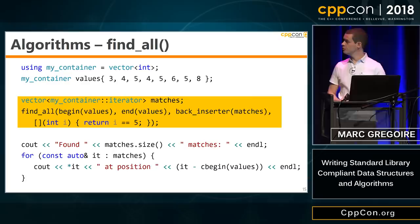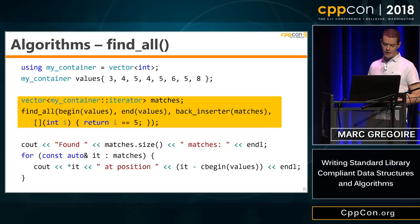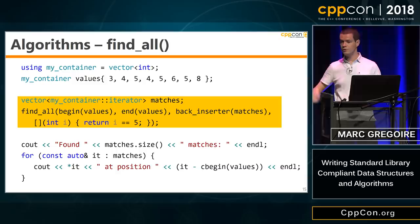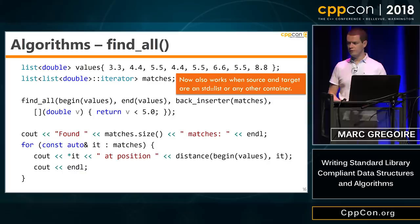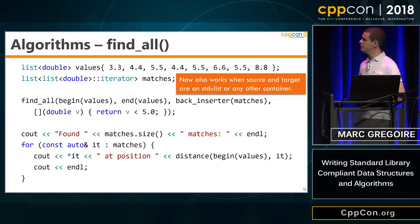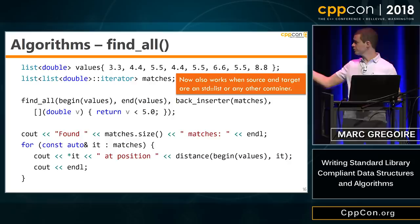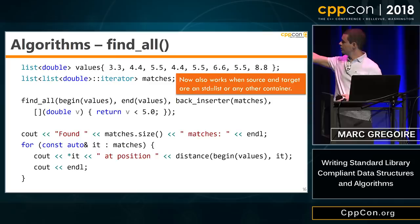How to use it? The only change is how we call it: give it begin and end iterators to the range you want to search. I store results in a vector of iterators called matches, using a back-inserter so I don't have to pre-size the container. The big change is that I can now use it on different kinds of containers. Here's an example where the values are stored in a list instead of a vector, and results stored in a list of iterators. I use std::distance in the last loop because list iterators cannot be subtracted.